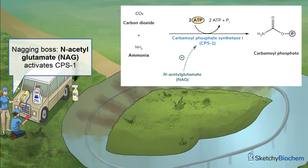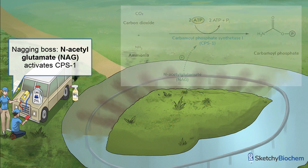NAG is an allosteric activator that binds to CPS-1 to make it work better. NAG is made from acetyl-CoA and, more importantly, glutamate — a product of amino acid catabolism. Extensive amino acid catabolism produces excess nitrogen and increases NAG, which stimulates the urea cycle by activating CPS-1.